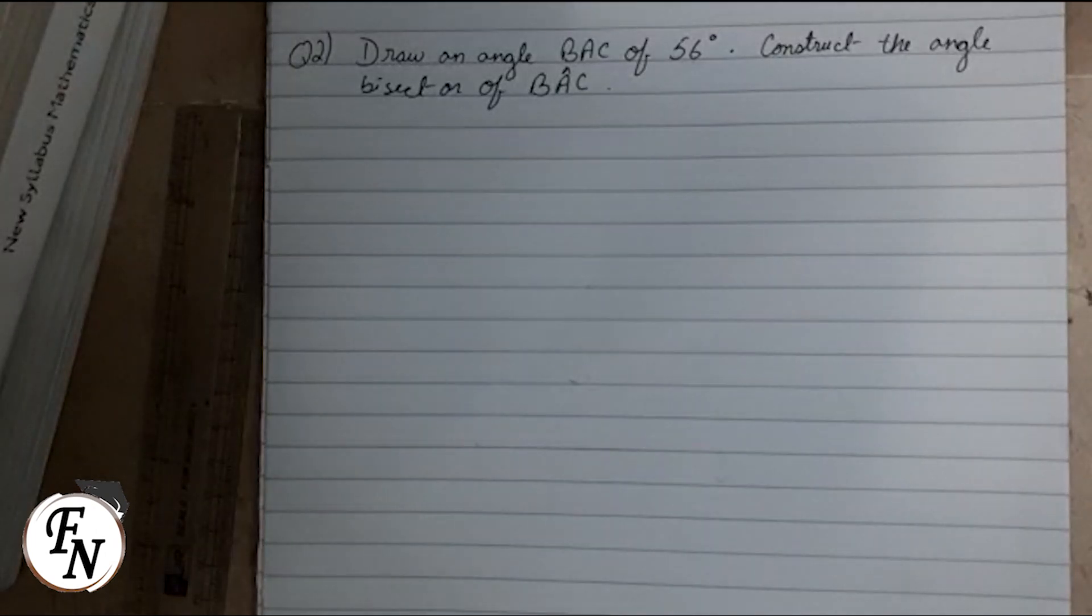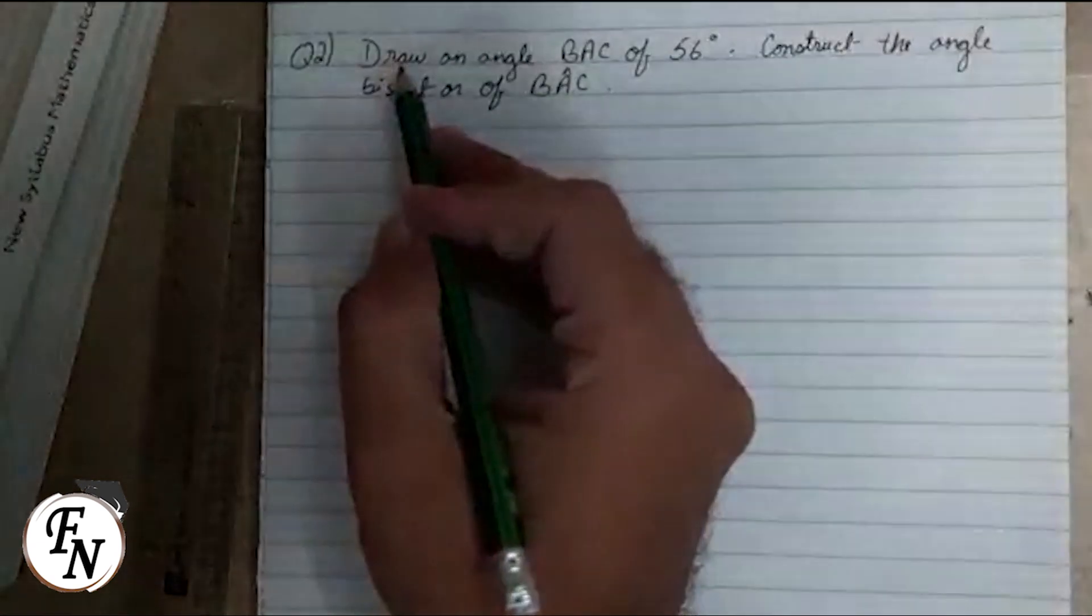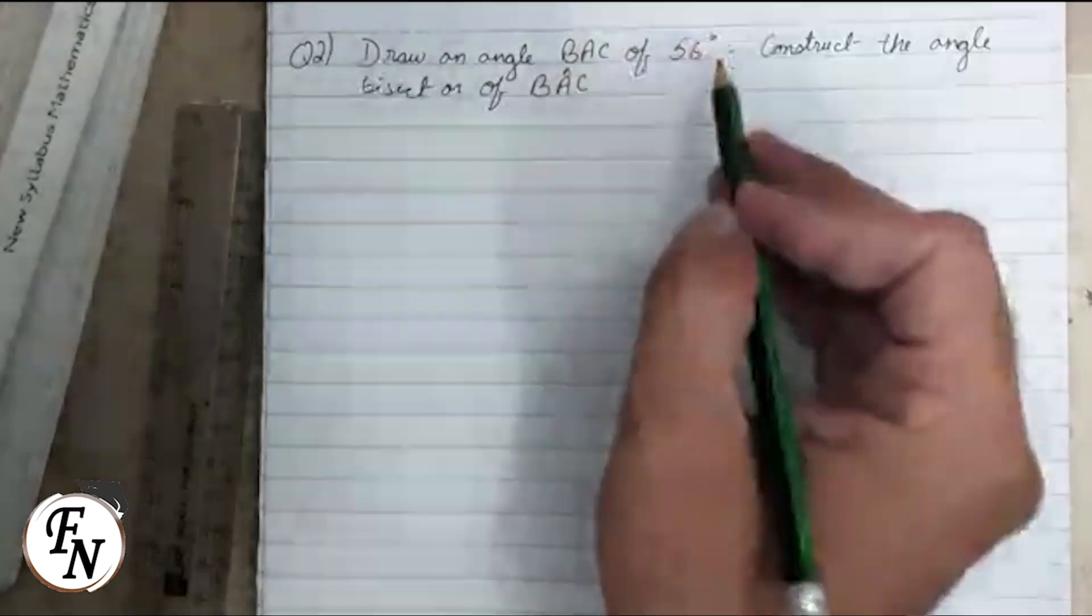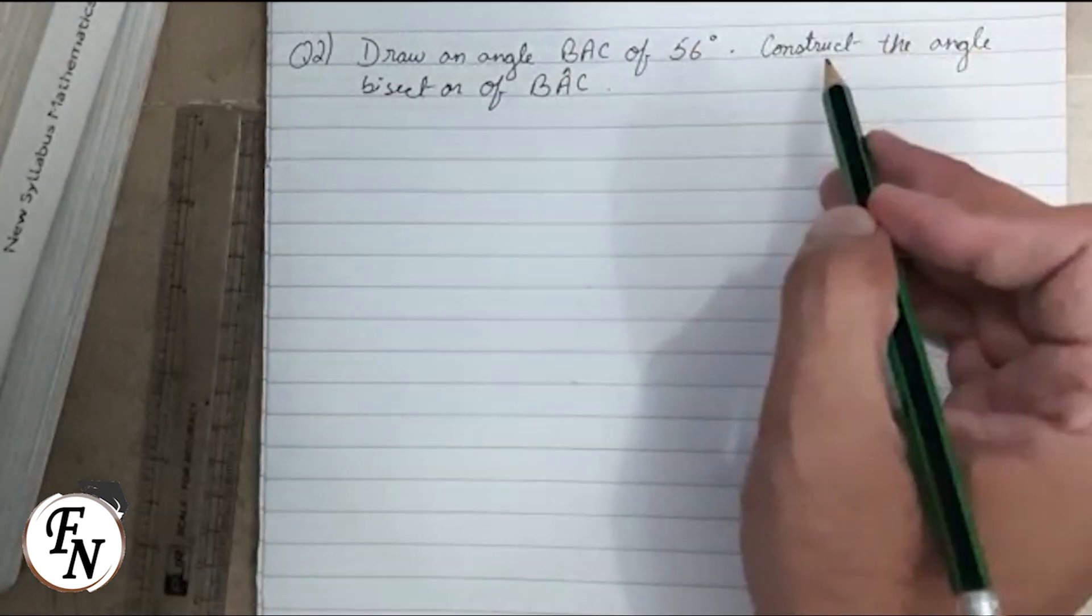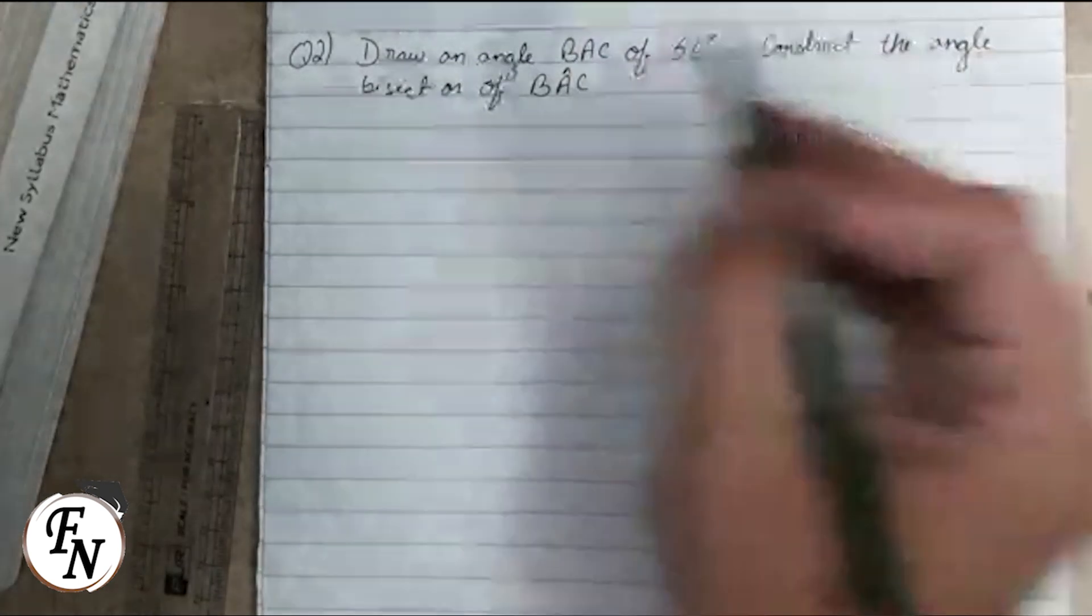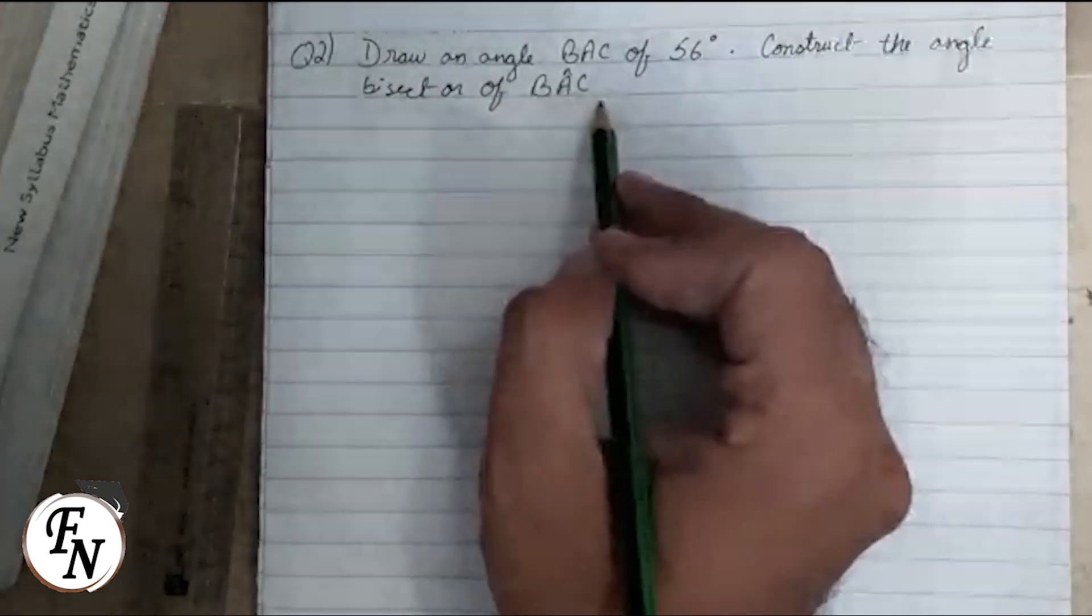Hello everyone, I'm here with the new topic which is angle bisector. So I'm here with a question which is: draw an angle BAC of 56 degrees and then construct the angle bisector of BAC.